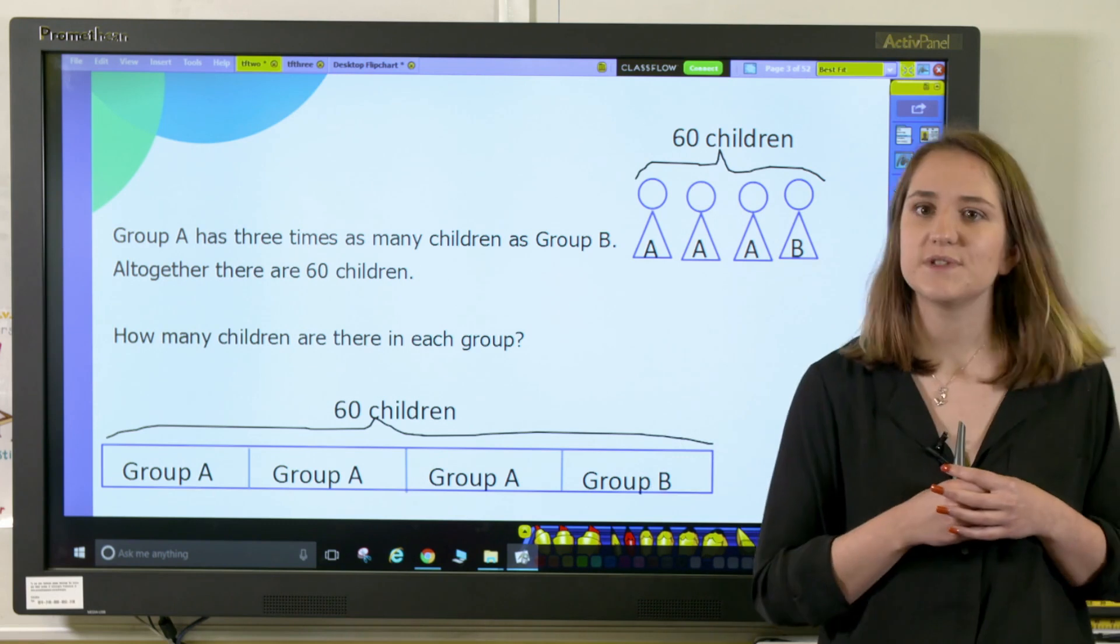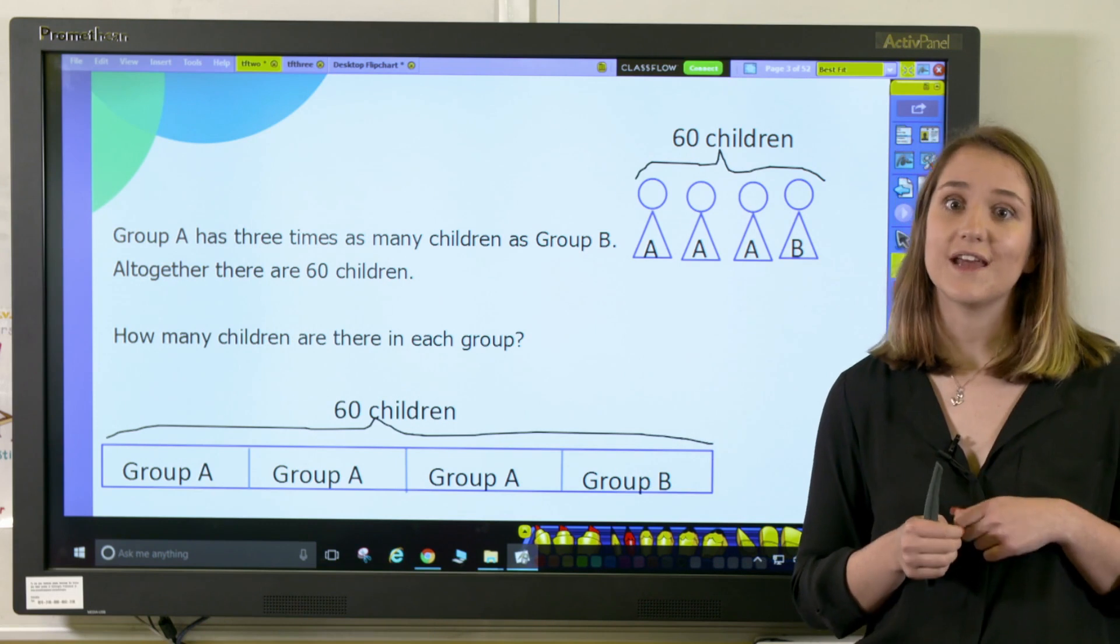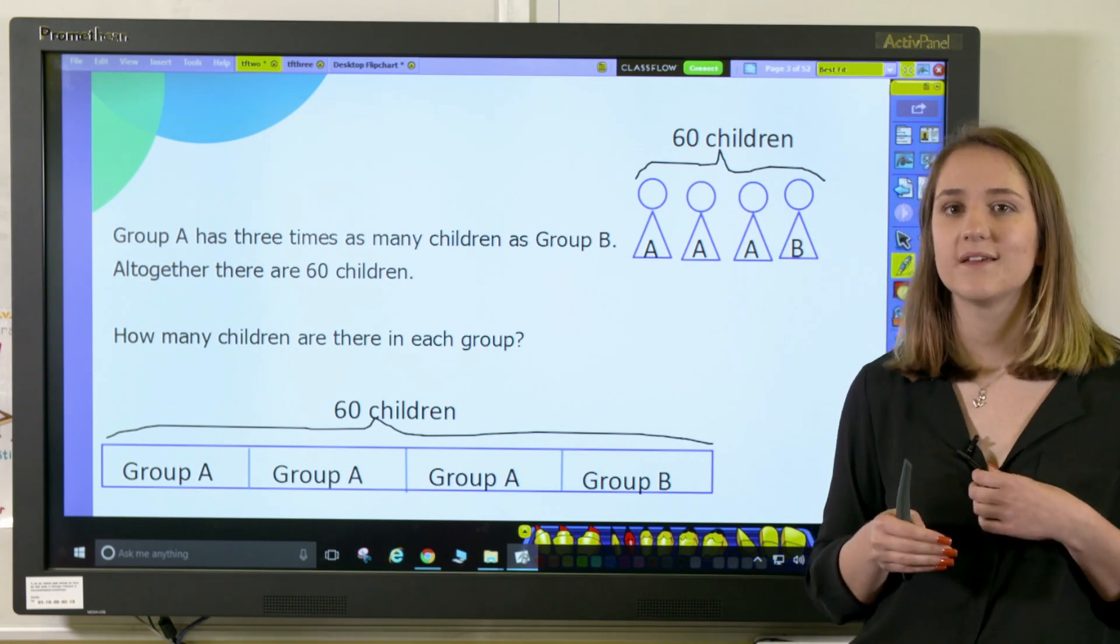This should then help them to notice that three in every four children are in group A, and one in every four children are in group B. So therefore three-quarters of the children are in group A, and one-quarter are in group B.